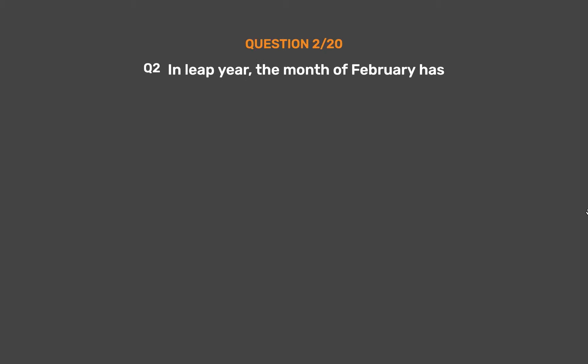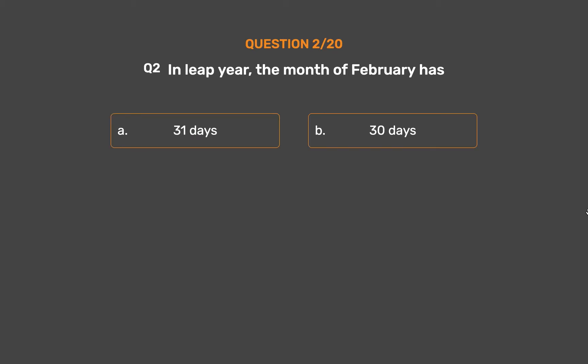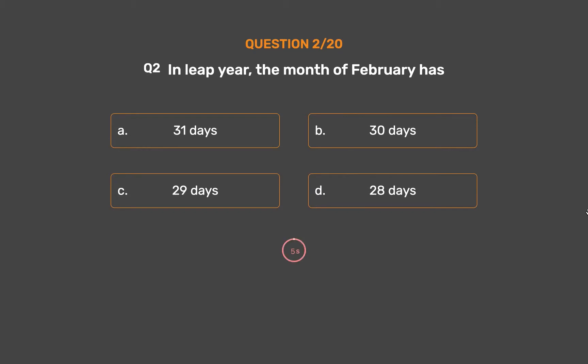Question number 2. In a leap year, the month of February has: Option A: 31 days. Option B: 30 days. Option C: 29 days. Option D: 28 days.